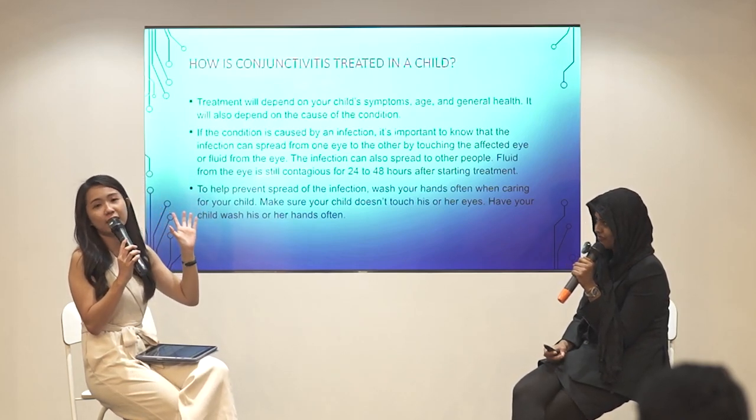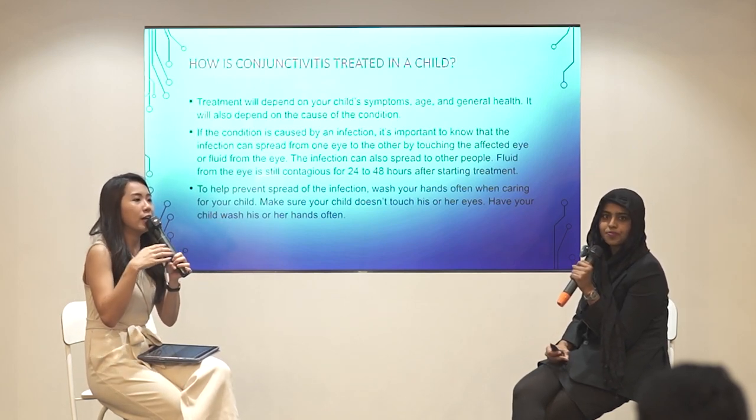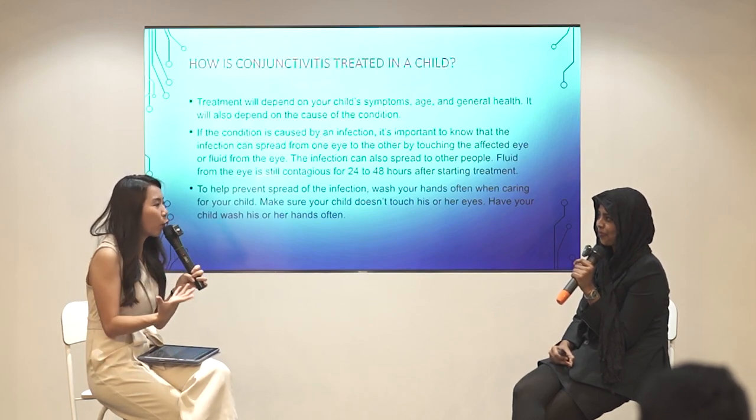Prevention is better than curing. Always observe what your children are doing, and if they make any simple complaint, bring them to find out and rule out the issue. The infection can spread to other people, and in severe cases can cause blindness. The main prevention measure for conjunctivitis is good hygiene — whether the cause is virus, bacteria, or allergy, hygiene is the most important thing. Clean hands, make sure children wash their hands properly after playing. You cannot stop them from playing, but once they come back from the playground, make sure they wash their hands and feet.